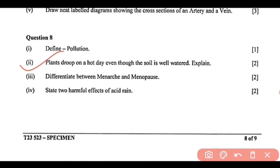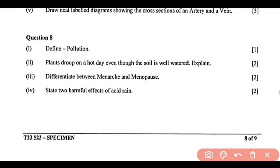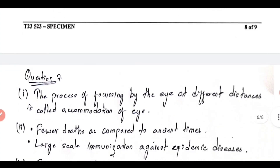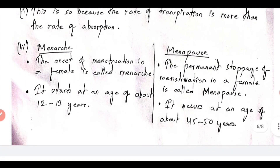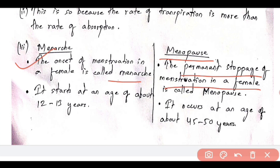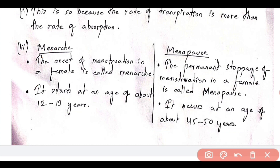Next, question number 2 of question 8: plants droop on a hot day even though the soil is well watered — explain. This is so because the rate of transpiration is more than the rate of absorption. Next, question number 3: differentiate between menarche and menopause. The onset of menstruation in a female is called menarche, and the permanent stoppage of menstruation in a female is called menopause. Menarche starts at about 12 to 13 years of age, and menopause occurs at about 45 to 50 years.